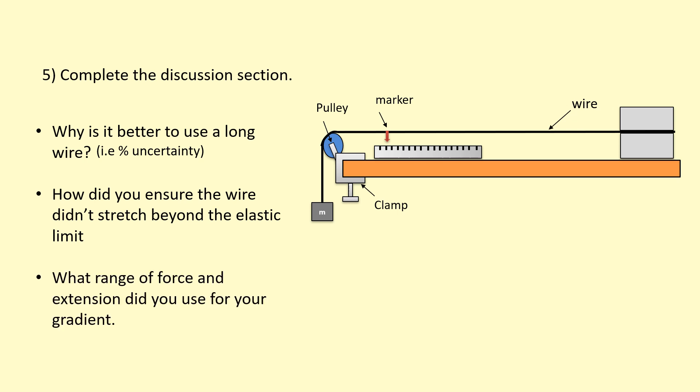Finally, what range of force and extension did you use when you use your gradient? When you plot, for example, force against extension, you shouldn't be measuring beyond the limit of proportionality, which is where the line stops being a straight line. You should only use across this section here where it's a straight line and use that for your Young's modulus.